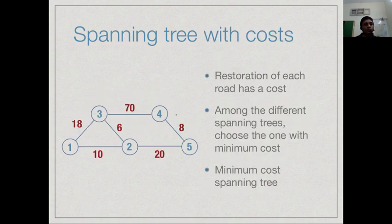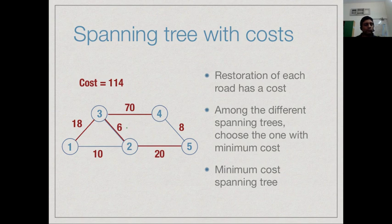Now, suppose that the graph also has weights. In this example, the weight could be the cost of repairing a road. Supposing restoring a road has a cost and now the government would like to not only restore connectivity but do it at minimum cost. If the government chose to repair this tree of roads, then the total cost is 18 plus 6, 24 plus 70, 94 plus 20, 114.